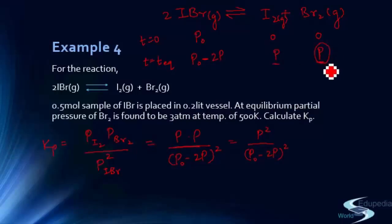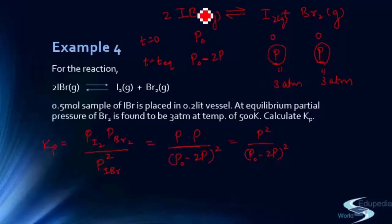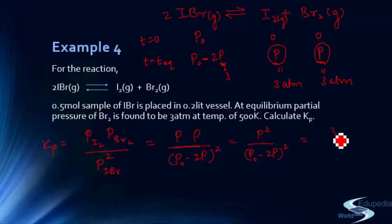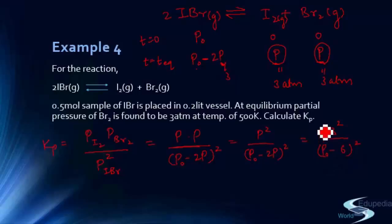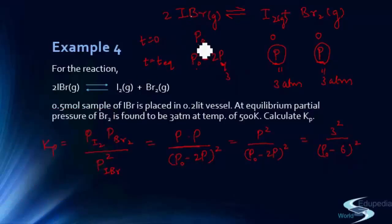Since the stoichiometric ratio of I2 to Br2 is 1:1, the partial pressure of I2 at equilibrium is also 3 atm. The partial pressure of IBr at equilibrium is P0 − 2P = P0 − 6. So Kp = (3 × 3) / (P0 − 6)² = 9 / (P0 − 6)².